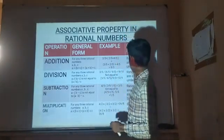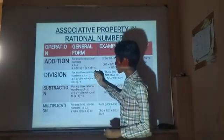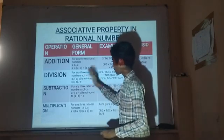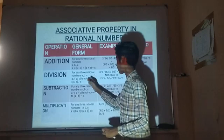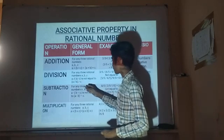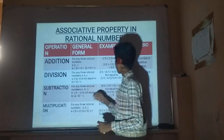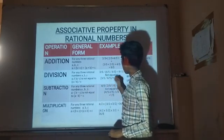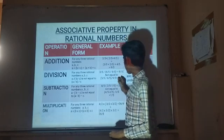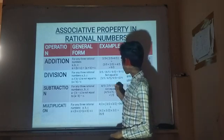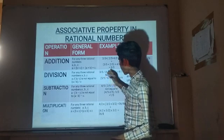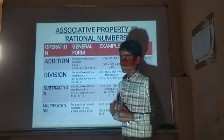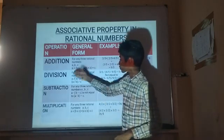Ratio numbers are associative under addition. For Division: for any three ratio numbers A, B, C, A divided by (B divided by C) is not equal to (A divided by B) divided by C. For example, 3 by 5 divided by (6 by 5 divided by 9 by 5) equals 9 by 10, which is not equal to the other grouping. This proves that ratio numbers are not associative under division.